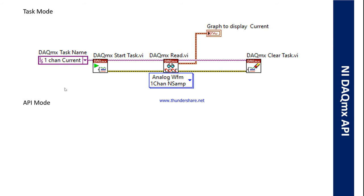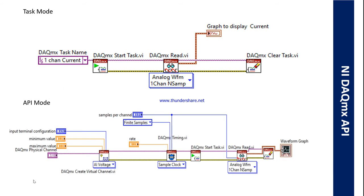The second one is the API mode. In this kind of programming, first we'll create a physical channel — we don't create any kind of task. We create a physical channel, and after that we'll insert minimum value, maximum value, and input configuration.